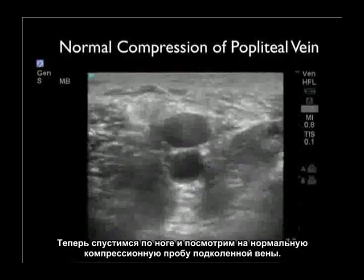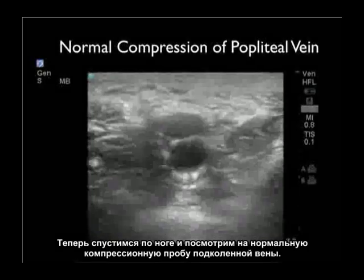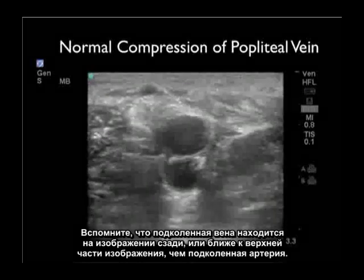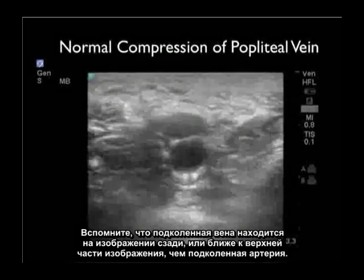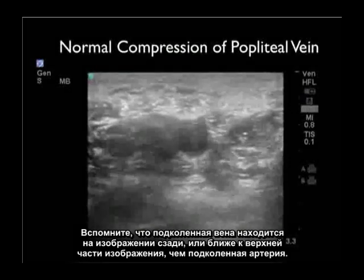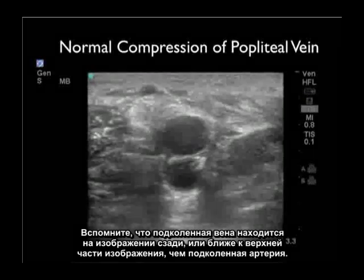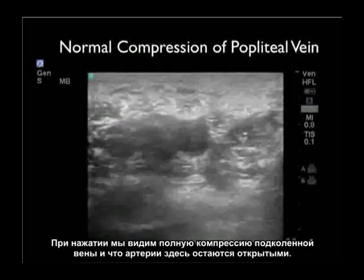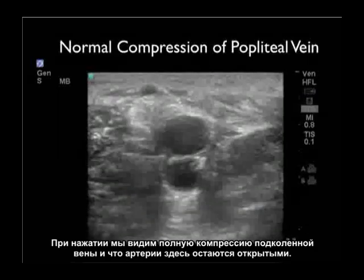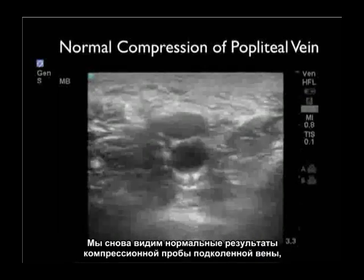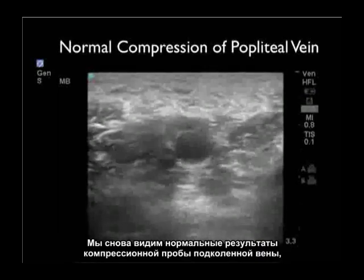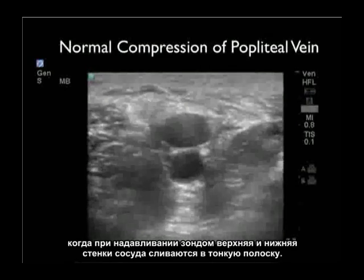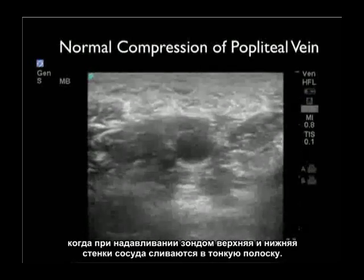Now let's move down to look at the normal compression exam of the popliteal vein. The popliteal vein is seen towards the posterior aspect of the image, closer to the top, compared to the popliteal artery. As we press down, we note complete compression of the popliteal vein while the artery stays open — a normal compression exam with the anterior and posterior walls of the vessel completely touching down with probe pressure.